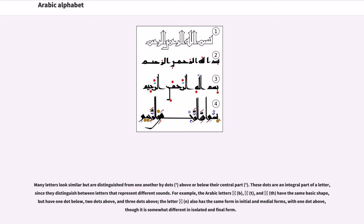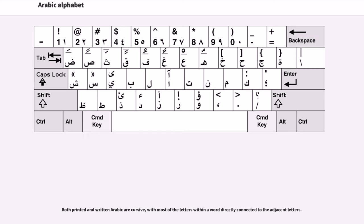The letter N also has the same form in initial and medial forms, with one dot above, though it is somewhat different in isolated and final form. Both printed and written Arabic are cursive, with most of the letters within a word directly connected to the adjacent letters.